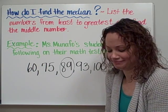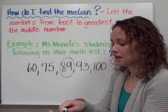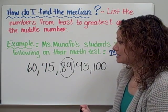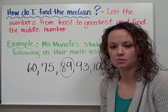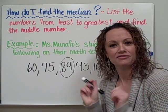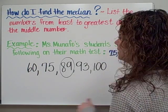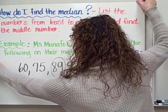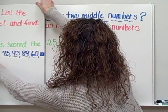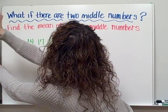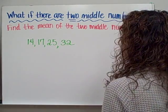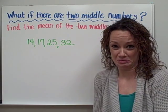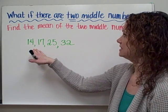Seems pretty simple, right? Well, a little too good to be true. This works sometimes as easily as this problem, but I'm going to show you an example where you might have a little difficulty. What if there are two middle numbers? Let's take a look at this set of data.